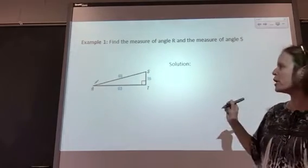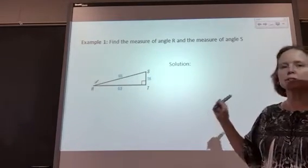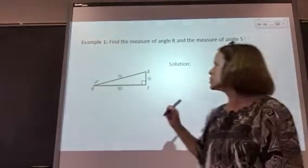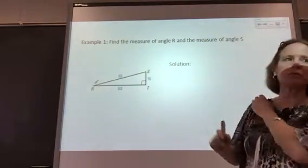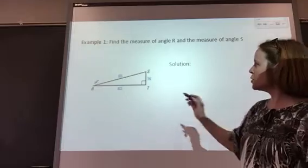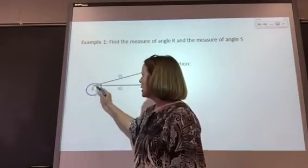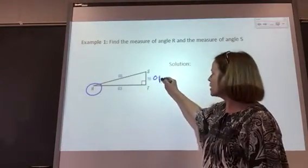We're going to try an example to find the measure of angle R and S. You can use the inverse trig ratios to help us solve for these missing angle measures. Let's use angle R as our angle of reference and label our diagram.